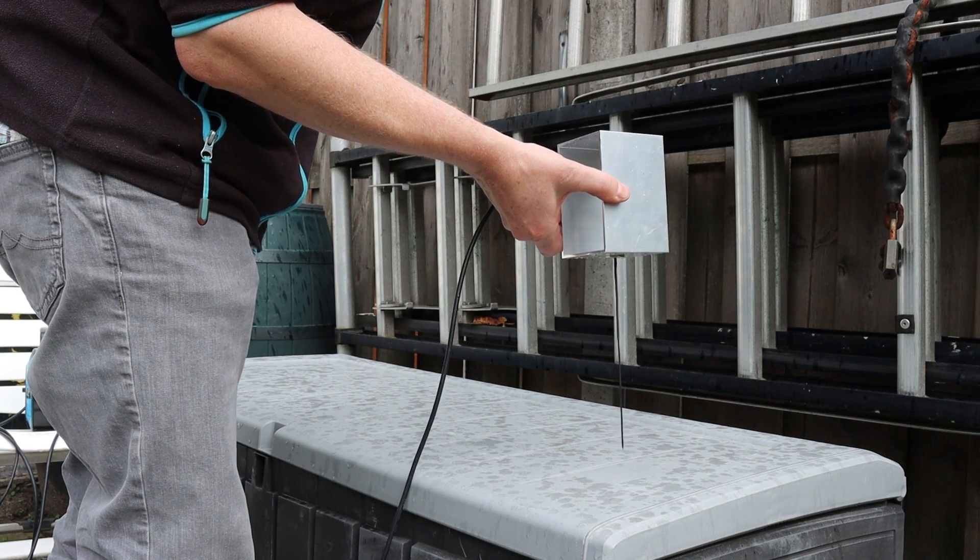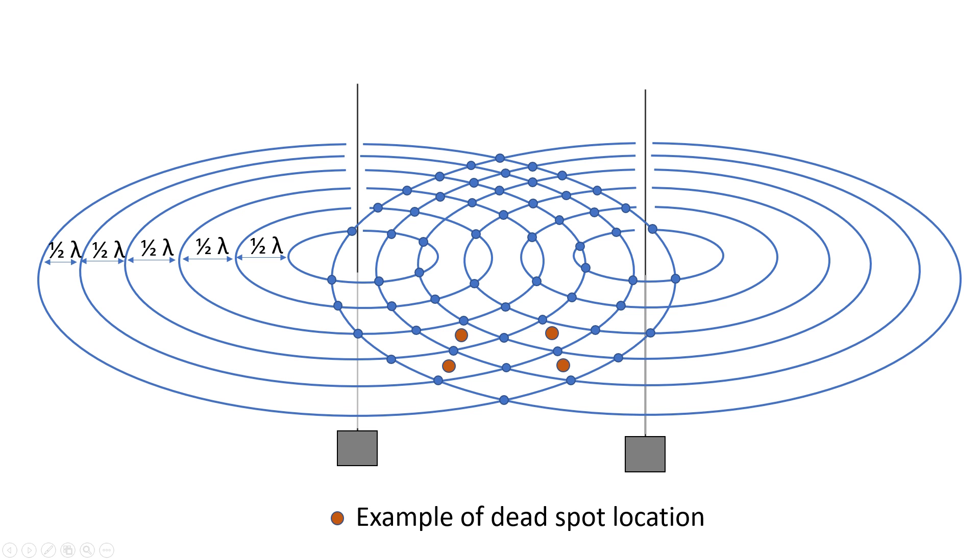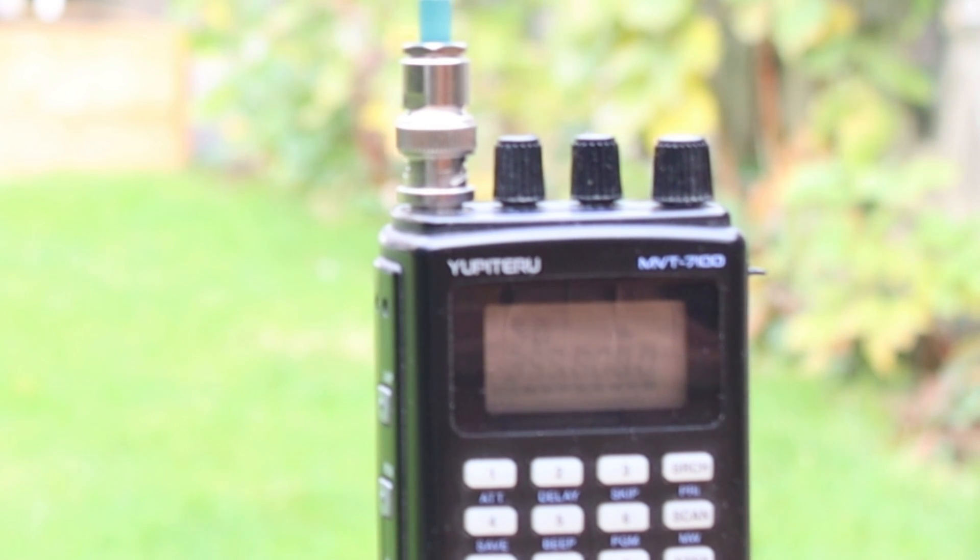And if for example I rotate one of the two antennas by 180 degrees, we observe that the signal goes from very low to a high value. Because then the radio waves are not cancelling each other out anymore, but are suddenly interfering constructively, because they are in phase again.